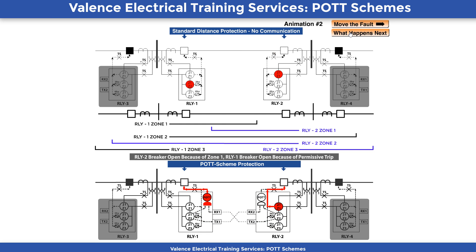Relay 1 should trip in 20 to 40 cycles in the normal protection scheme because it has detected a Zone 2 fault, which means the fault could be on the line the relay is supposed to protect, or it could be on the line Relay 4 is installed to protect. Therefore, it's going to wait for Relay 4 to trip in case the fault is on Relay 4's line. The POT scheme on the bottom of the screen will not wait, because it's getting feedback from Relay 2 that the fault is on the line. If Relay 1 and Relay 2 both detect a Zone 2 fault, that means the fault should be in the overlapping region between the two relays, which is between 75 to 100% of the line. Relay 2 will trip after a short communication time delay and remove the fault from the system.